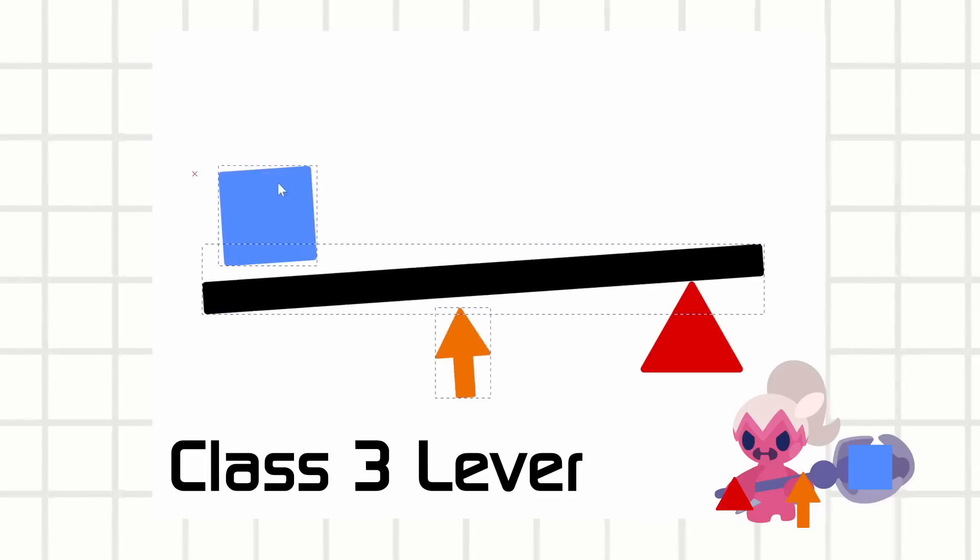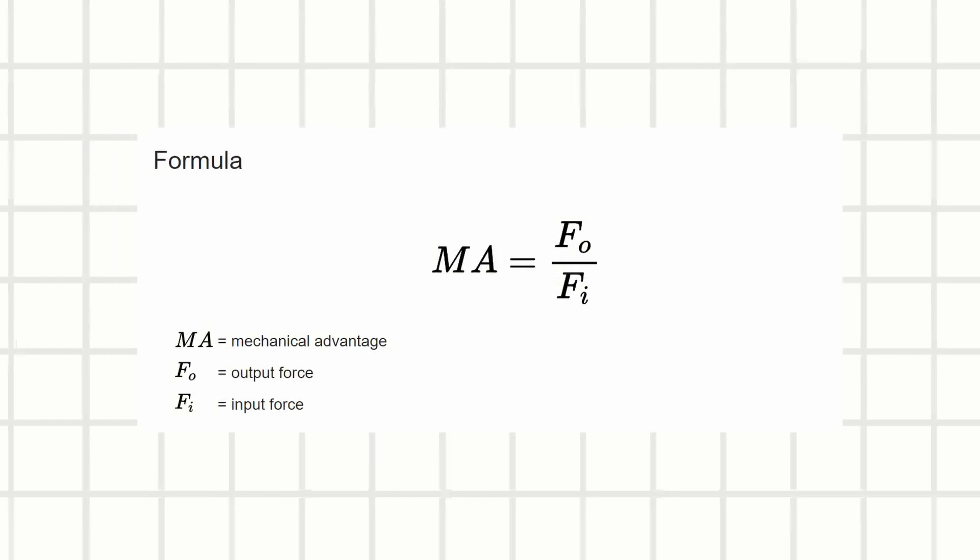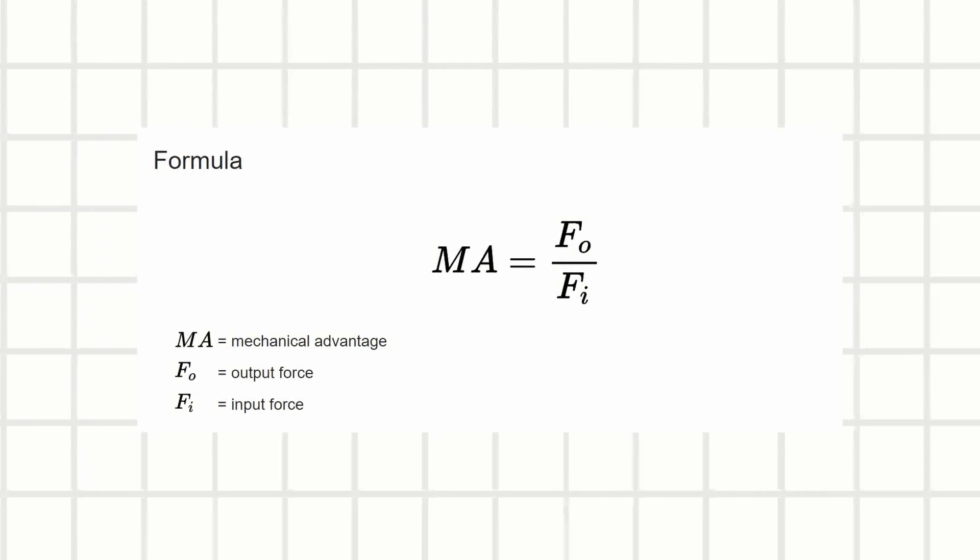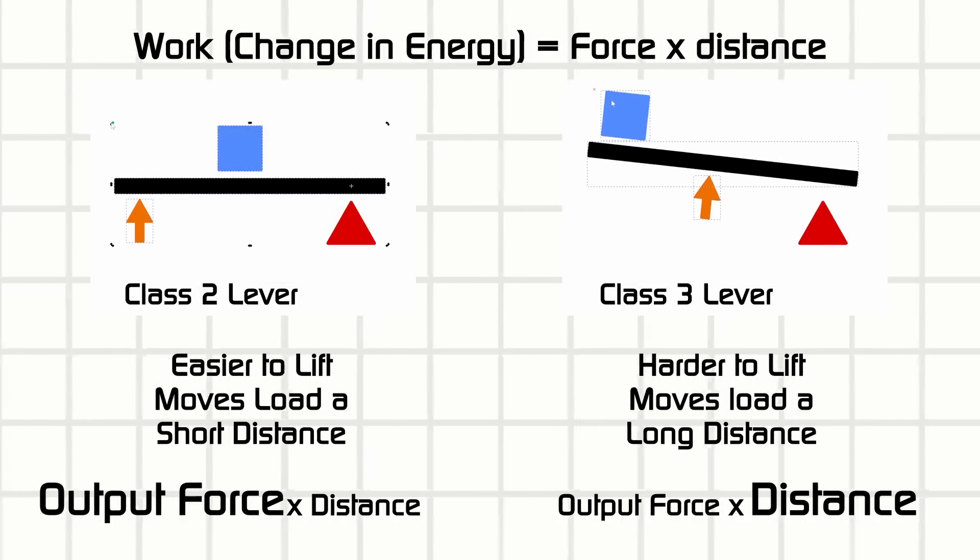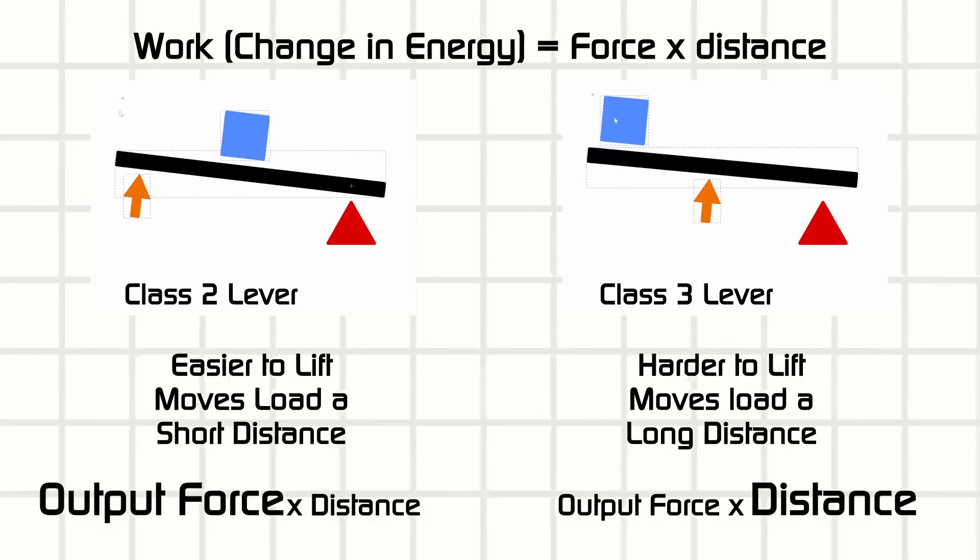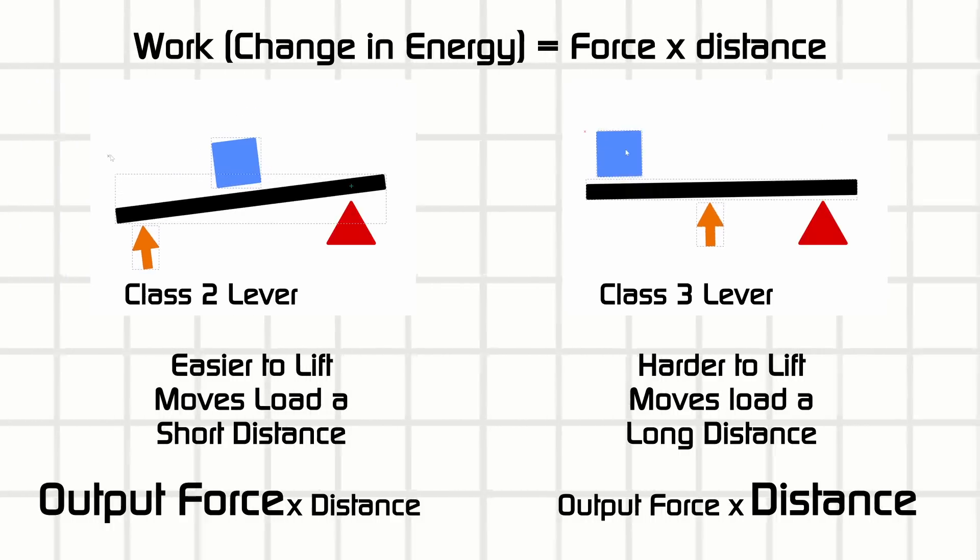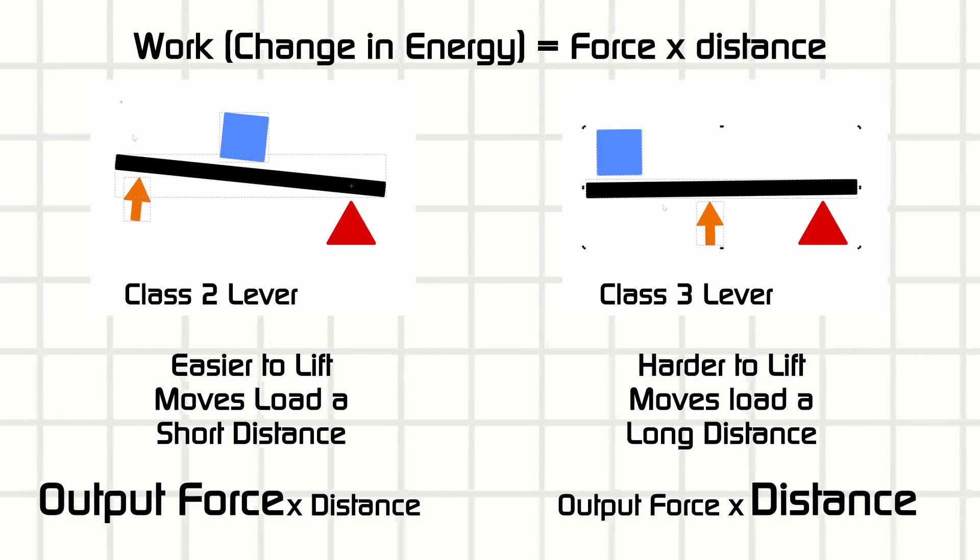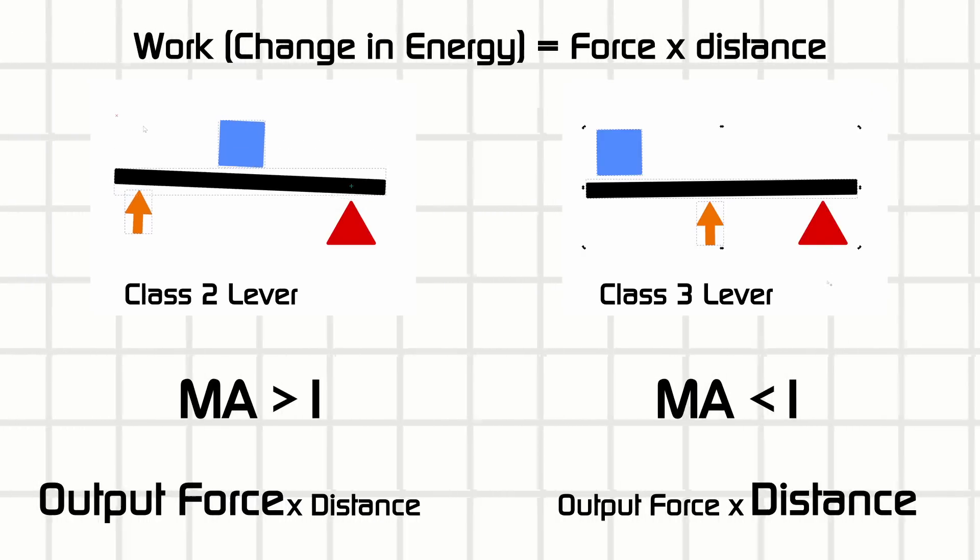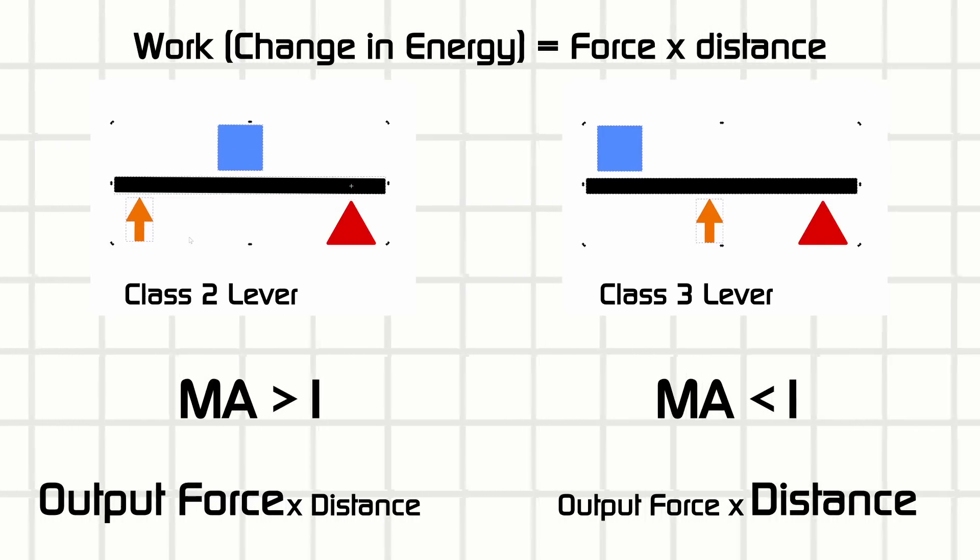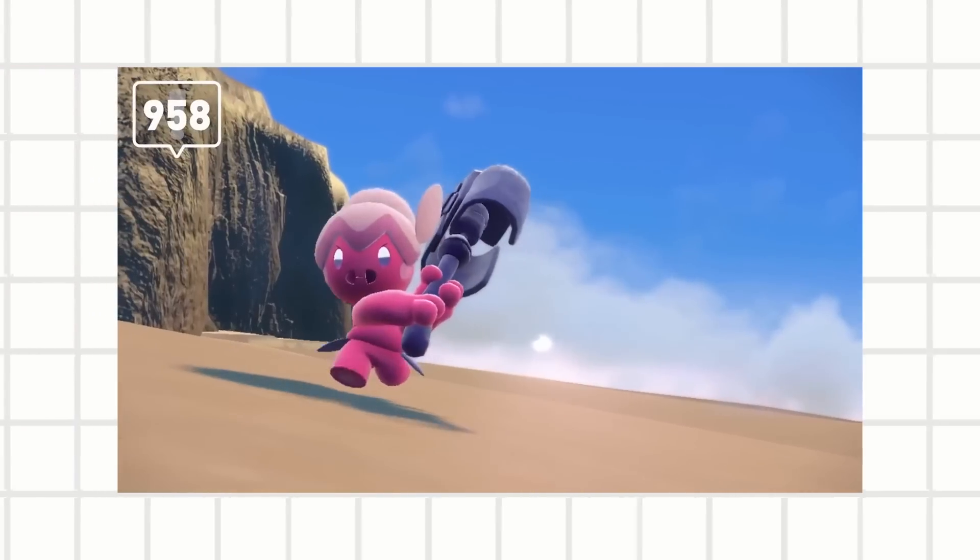What is this mechanical advantage I keep yammering about? With any machine, the mechanical advantage is how much the machine amplifies your force. Energy is still conserved in these machines. You're still doing the same work with or without the machine, but you're putting in less force over a long distance to exert a lot of force over a short distance. If it makes your force weaker, then that's a mechanical advantage of less than one, and if it makes your force stronger, that's a mechanical advantage of more than one. But a good machine doesn't always have to have a high mechanical advantage. A good machine just needs to get the job done.